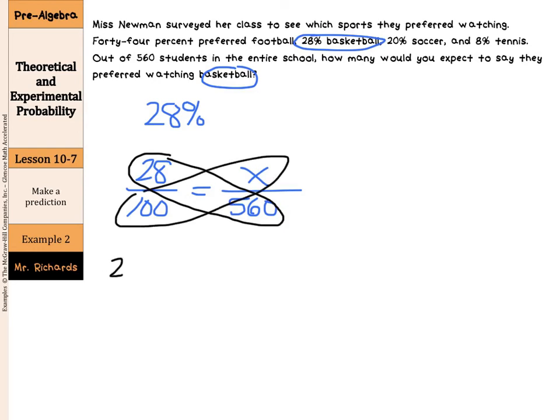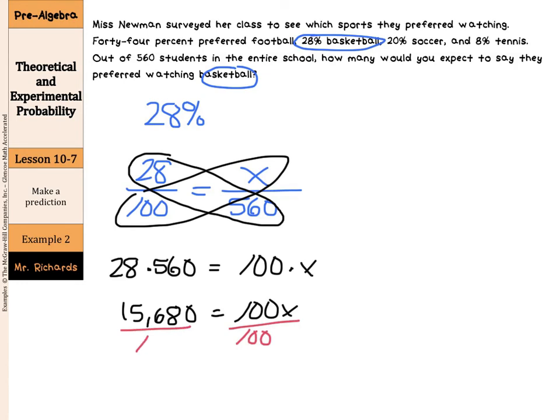28 times 560 is going to equal 100 times x. 28 times 560 is 15,680 equals 100x. And when you divide by 100 on both sides, your result is 156.8 equals x, which we can just say 157 students.